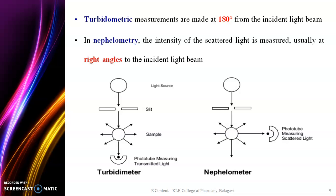Turbidimetry measurements are made at 180 degrees from the incident light beam. Whatever light is transmitted by the sample will be measured at 180 degrees in case of a turbidimeter. In Nephelometry the photo tube is placed exactly at right angle or 90 degrees to the sample holder, measuring the scattered light.